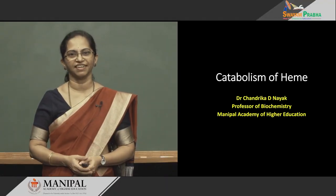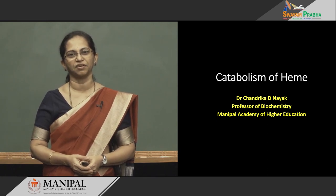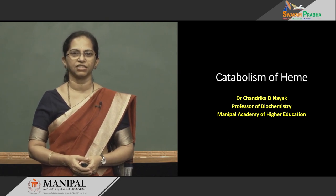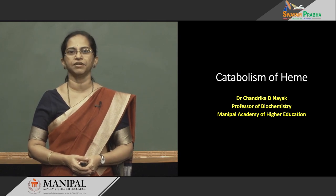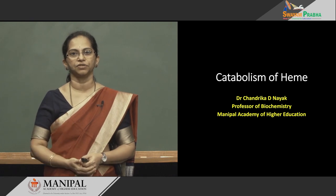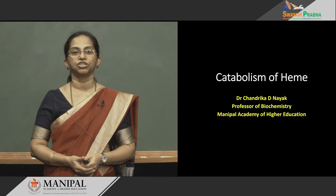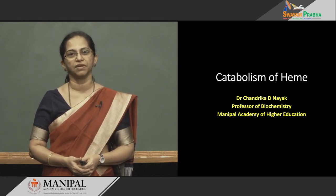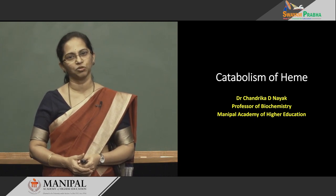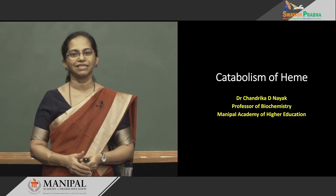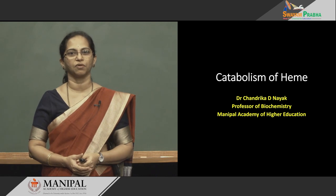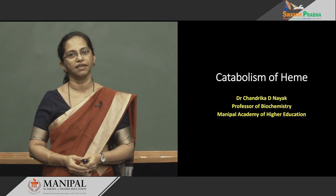Welcome to this session. I'm Chandrika Nayak from the Department of Biochemistry at Manipal Academy of Higher Education. The topic for this session shall be catabolism of heme. It is a very clinically relevant topic because the end product from heme catabolism, if it accumulates in the blood or in the body, can cause severe consequences. The chief product you get on heme catabolism is bilirubin, a simple yellow pigment that when it accumulates in the blood and tissues can cause a condition called jaundice, and with jaundice comes several complications.